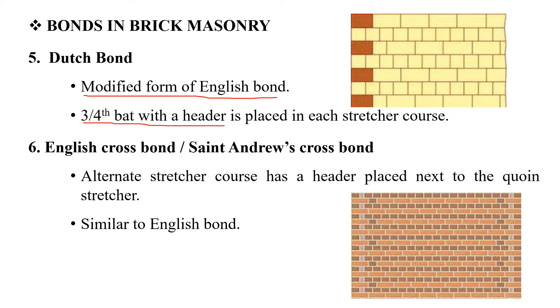The next bond is the English cross bond, also called St. Andrew's cross bond. It is similar to the English bond, but with a difference in the arrangement of the stretcher course between the two.